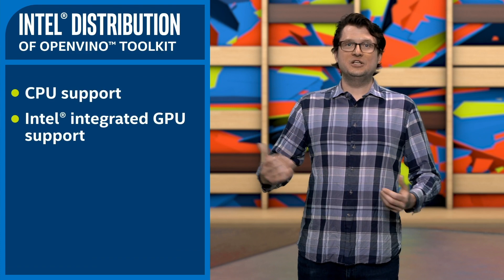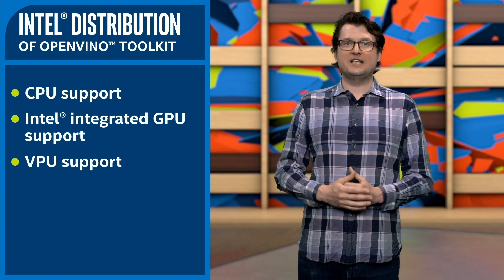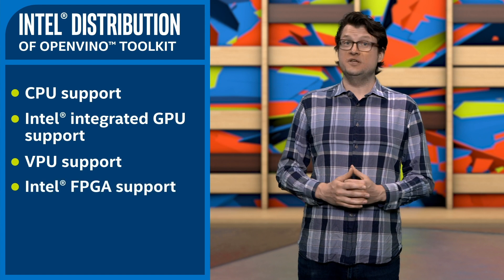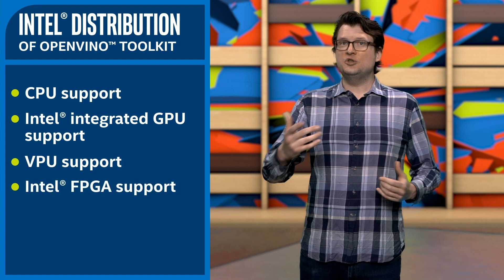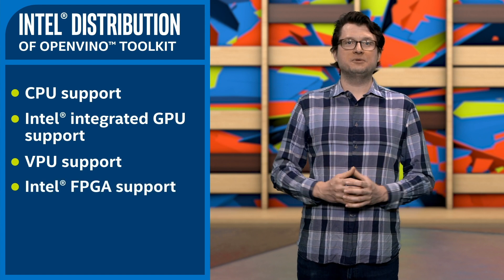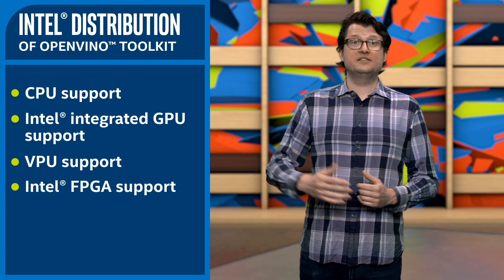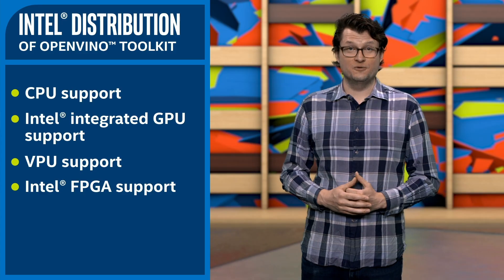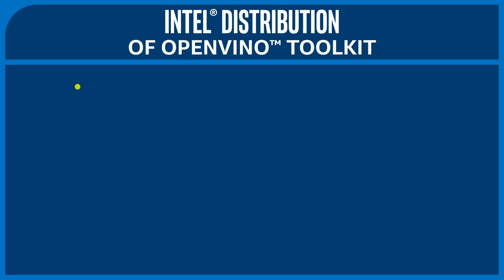Since the Intel distribution of OpenVINO Toolkit supports CPUs, Intel integrated GPUs, VPUs, and Intel FPGAs, the Toolkit is a great option for creating applications with the Intel NCS2.